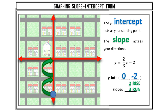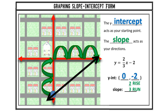My run is positive 3. Right is a positive direction, so I start by rising up, then I run — I go 3 to the right. This is where I plot my second point. Once I've made my two points, all I need to do is connect the dots. A line is defined by two points.